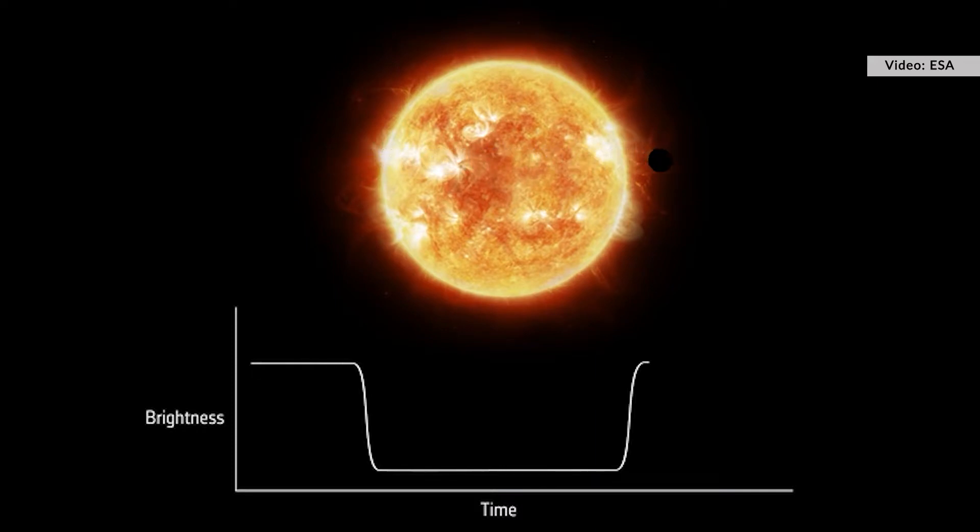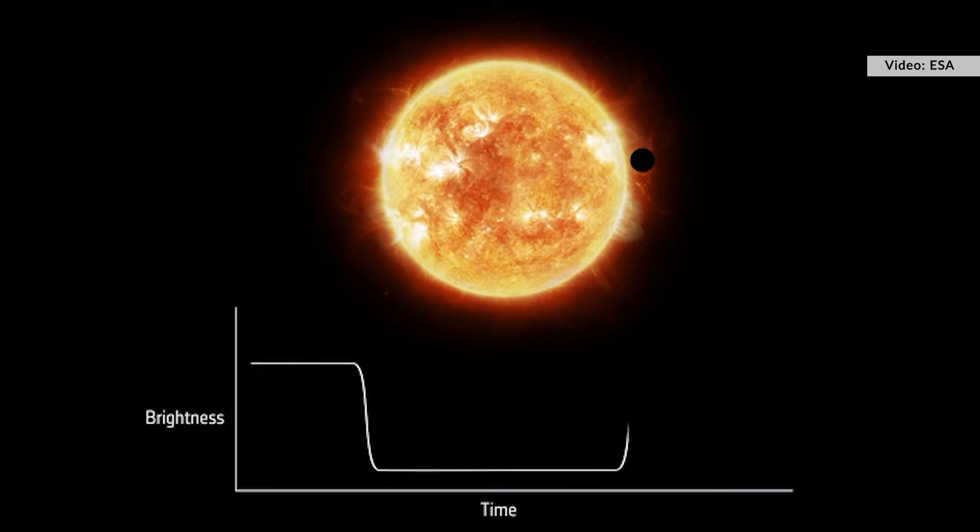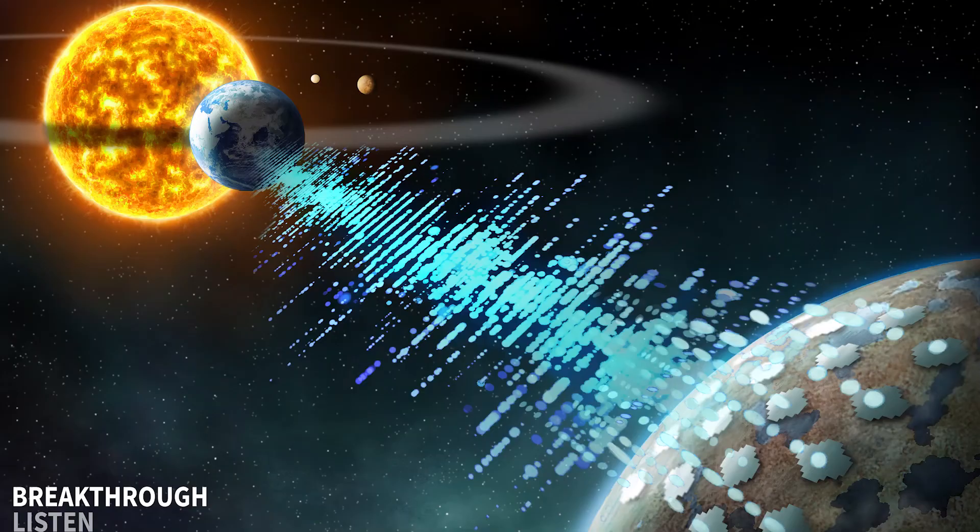We timed our observations so that we would be looking for a signal right when the exoplanet was crossing the face of their sun. This is sort of a special time, almost like midnight or noon but astronomical. People have talked about observing at this special time before but it had never been done, and so I'm currently working on going back to those observations and analyzing, looking for any narrow band radio signals that are artificial and not coming from the earth.